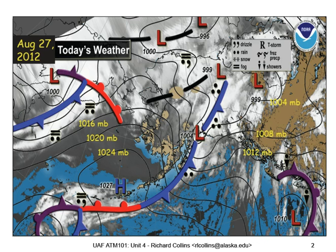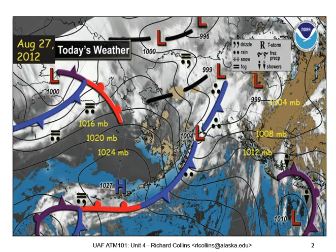This is consistent with the pattern expected around a high pressure system. Around a high pressure system in the northern hemisphere, we have clockwise circulation of air — on the western side air moves northward, on the eastern side it moves southward. So warm air moves northward on the western side and cold air moves southward on the eastern side, consistent with the warm front and cold front pattern.